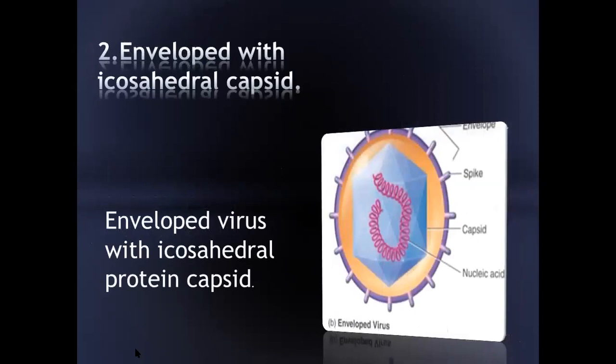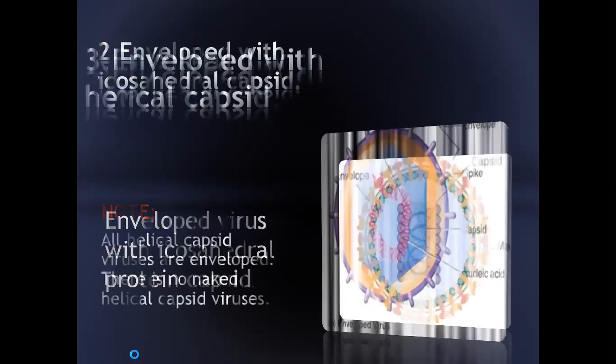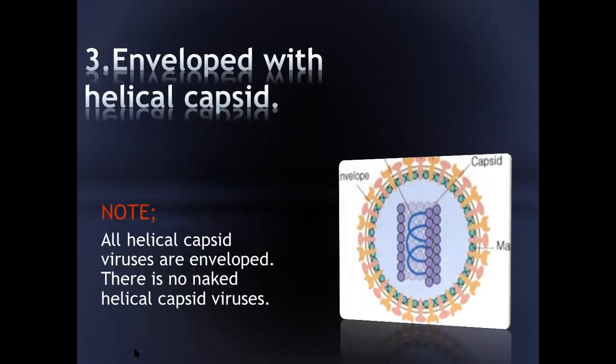The second form is enveloped viruses with an icosahedral capsid — this virus has a lipid envelope and contains an icosahedral capsid, like a hexagonal structure, covering and protecting the viral genome. The third structure is enveloped viruses with helical capsids. All viruses that contain a helical capsid are always covered by an envelope — there are no helical capsid viruses without an envelope.